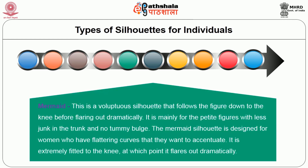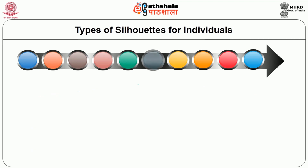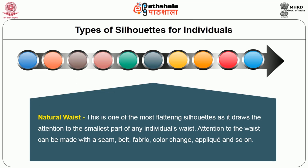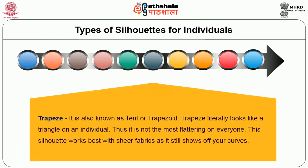The sheath kind of silhouette flows straight down from the neckline, gently hugging the form. This is used to refer to dresses that are form fitting from the bust through the length of the thighs. This is generally recommended for thin women who have gentle to no curves. Mermaid silhouette is a voluminous silhouette that follows the figure down to the knee before flaring out dramatically. It is mainly for petite figures with no tummy bulge. The mermaid silhouette is designed for women who have flattering curves that they want to accentuate. It is extremely fitted to the knee, at which point it flares out dramatically. It is not recommended for women who are short. Natural waist silhouettes are often most flattering since it draws attention to the smallest part of any individual's waist. Attention to the waist can be made with a seam, belt, fabric, texture, applique and so on. Trapeze kind of silhouette is also known as tent or trapezoid.